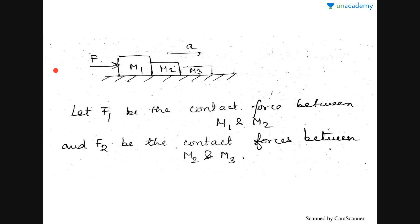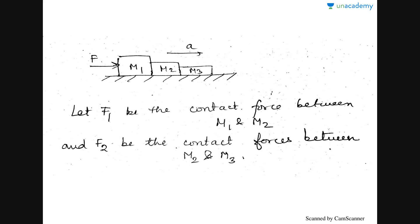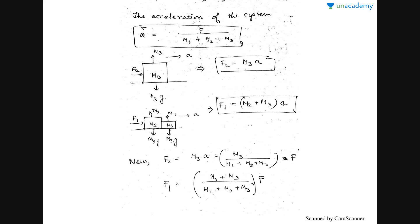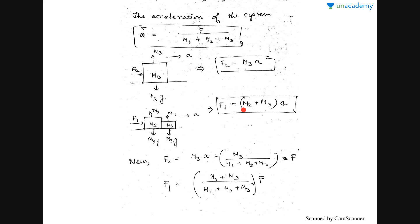Now let us consider another system: three blocks m1, m2, and m3 being pushed forward with a force F, resulting in acceleration a. Let f1 be the contact force between m1 and m2, and f2 be the contact force between m2 and m3. The acceleration of the system, since the body moves as a whole towards the right, is given by: a = F / (m1 + m2 + m3).